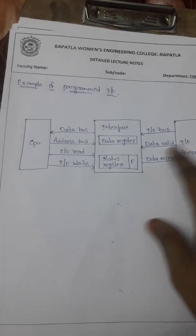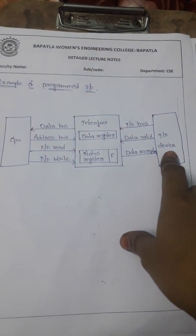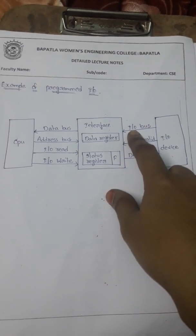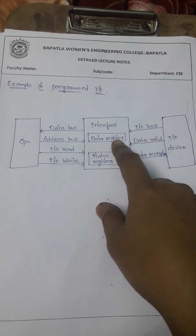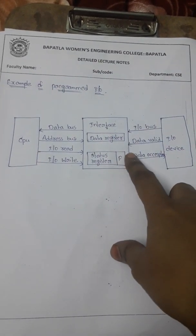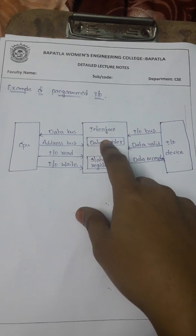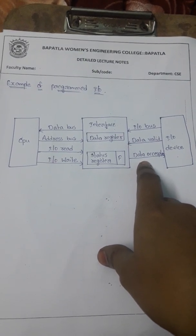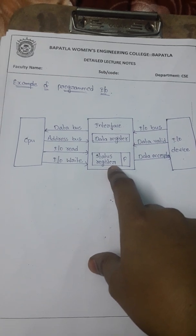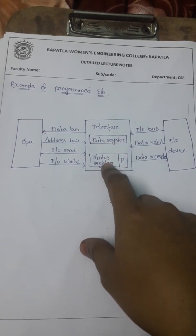Let us take an example of programmed I/O. We have a CPU, an I/O device, and an interface. When the data is available at the I/O device, it initiates the I/O bus and transfers the data through the I/O bus. When the data is available at the interface, it enables the data valid line and stores the data in the data register. It also enables the data accepted line and sets the status register flag bit to 1.